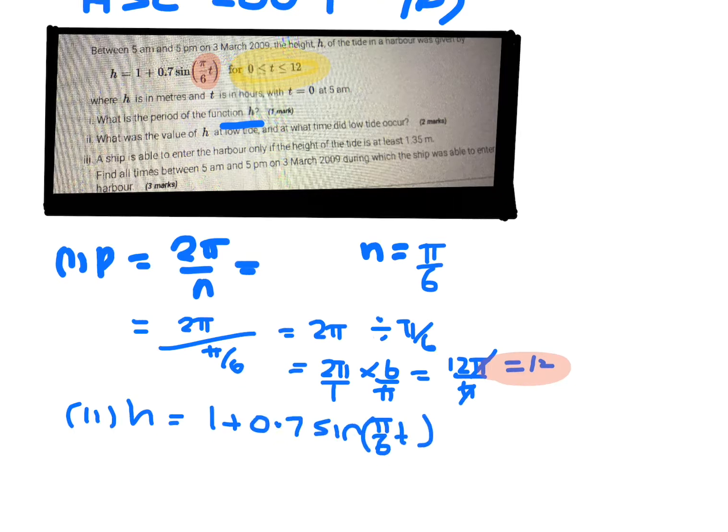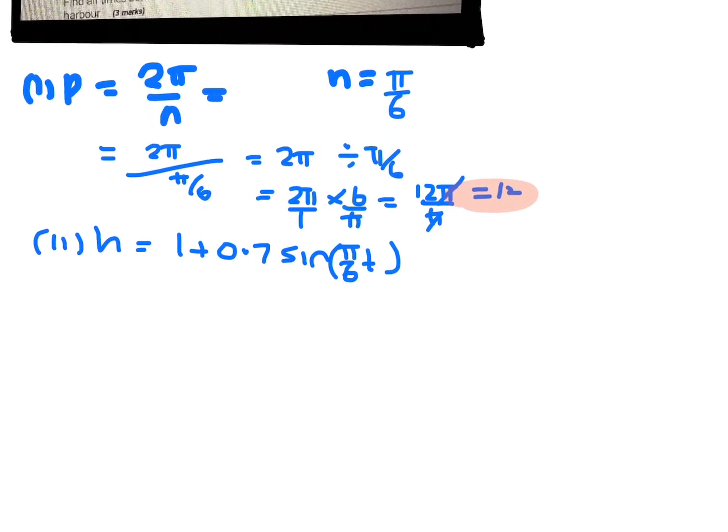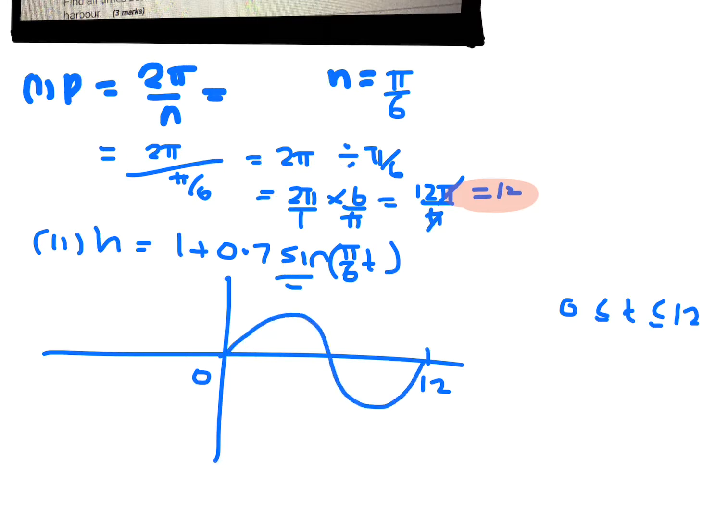Now we know that when we are sketching this, we know that it does go between, we want it between 0 and 12. So we know it goes between 0 and 12. So it's a sine curve, so we know that the normal sine curve would have gone like that.